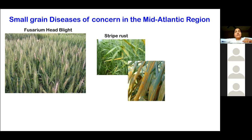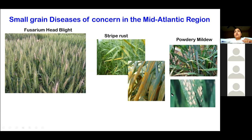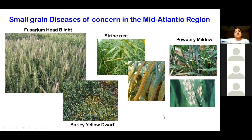We also sporadically get stripe rust, which is again a fungal disease. It does not affect wheat heads, but it drastically reduces yield because of the compromised photosynthetic efficiency of the diseased leaves. Powdery mildew appears early in the season and can also lead to yield losses, although there are good control options available. Barley yellow dwarf is another disease of concern in our region — it's a viral disease, and the typical symptoms are yellowing and stunting of plants. I work on Fusarium head blight and stripe rust, and have started working on powdery mildew and barley yellow dwarf as well.